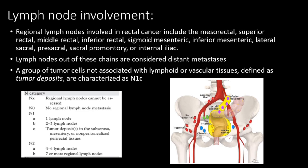Regional lymph nodes involved in rectal cancer include mesorectal, superior, middle, inferior rectal, sigmoid mesenteric, inferior mesenteric, lateral sacral, presacral, sacral promontory, and internal iliac nodes. Lymph nodes outside these chains are considered as distant metastasis. A group of tumor cells not associated with lymphoid or vascular tissues are defined as tumor deposits, categorized under N1C.